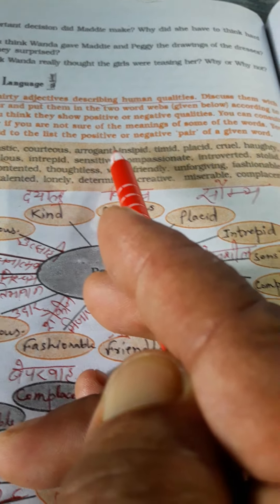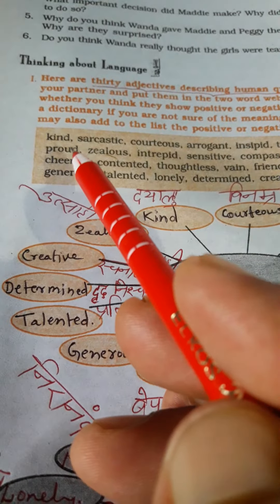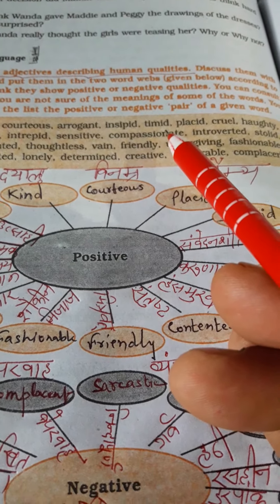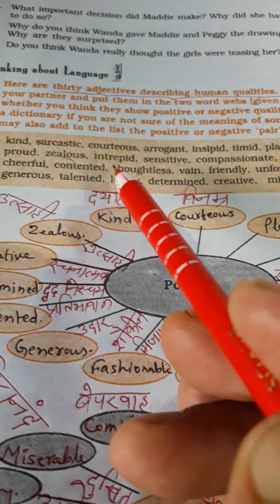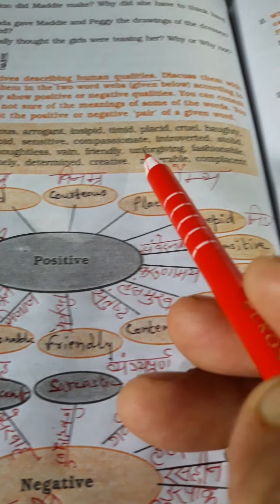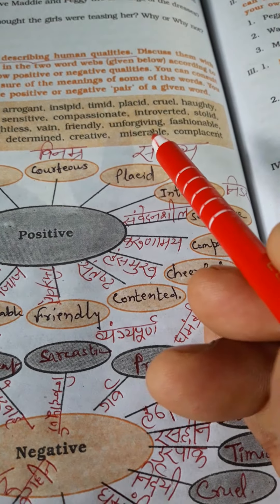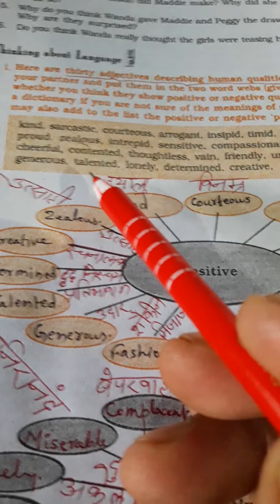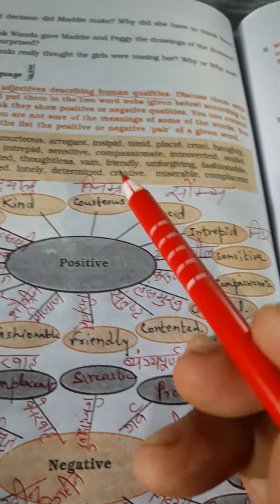You may also add to the list the positive or negative pair of a given word. The words given are: kind, sarcastic, courteous, arrogant, insipid, timid, placid, cruel, hearty, proud, jealous, intrepid, sensitive, compassionate, introverted, stolid, cheerful, contented, thoughtless, vain, friendly, unforgiving, fashionable, generous, talented, lonely, determined, creative, miserable, and complacent.